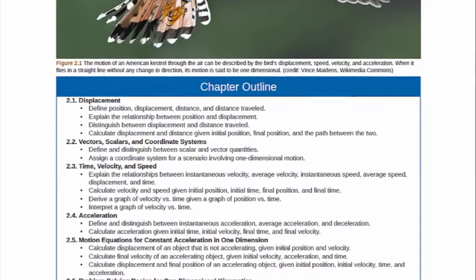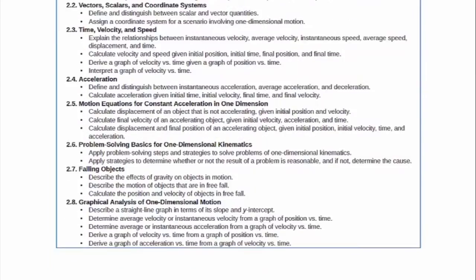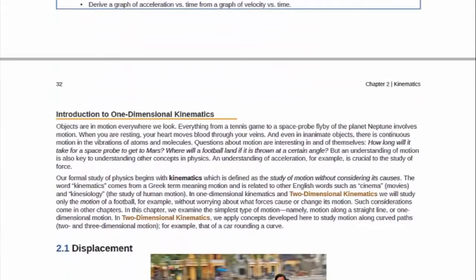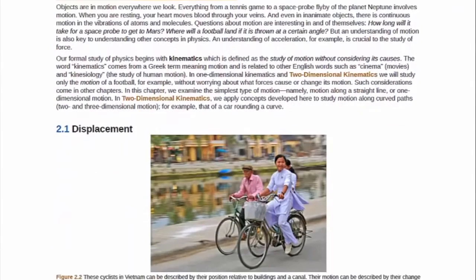So let's begin with Chapter 2. Here's our chapter outline. In this chapter, we're going to be looking at an introduction to one-dimensional kinematics. We're really going to be getting into the definitions of position, velocity, and acceleration.